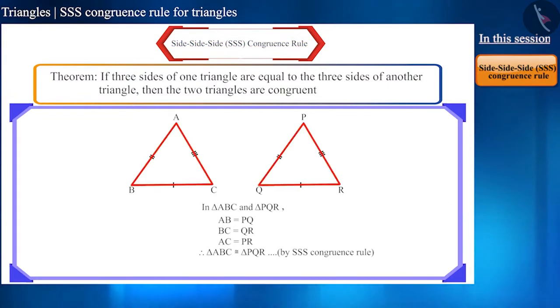So, if three sides of two triangles are equal, then they are congruent according to the SSS congruence rule. And we know that the corresponding parts of congruent triangles are equal. So, the corresponding angles will also be equal.